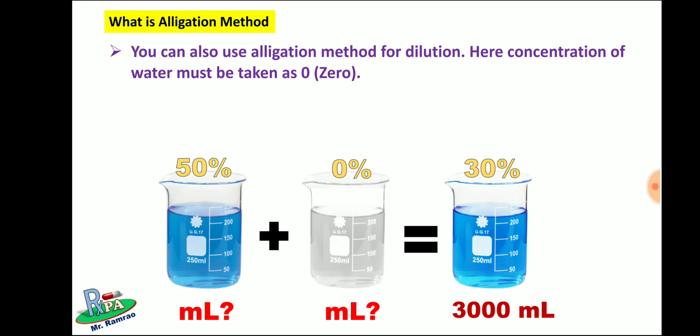You can also use the allegation method for dilution — in that case the concentration of water must be taken as zero. Whenever it is asked to dilute any preparation with water, you have to take the lower percent concentration as zero, because water does not contain any active ingredient.